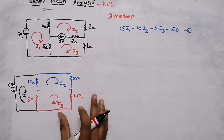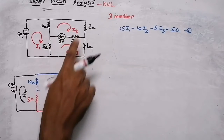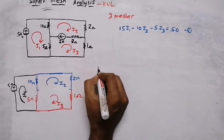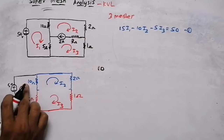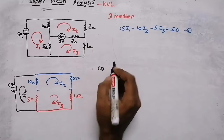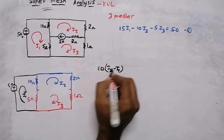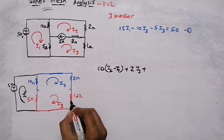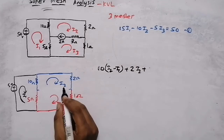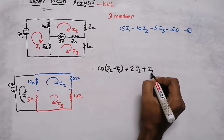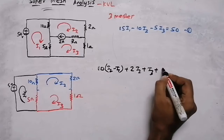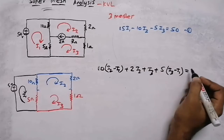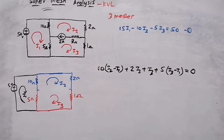After eliminating the current source branch, I write the super mesh equation. The 10-ohm resistor is common to mesh two and mesh one, so its term is 10(i2 minus i1). Then the 2-ohm resistor carries i2, giving plus 2i2. The 1-ohm resistor carries i3, giving plus i3. The 5-ohm resistor is common to mesh three and mesh one, so its term is 5(i3 minus i1). Setting the sum equal to zero gives the super mesh equation.